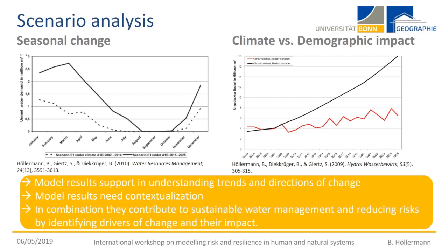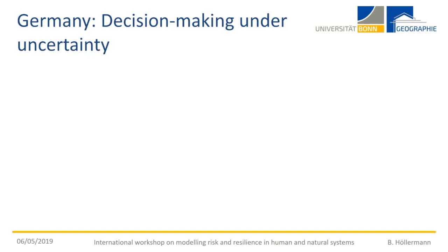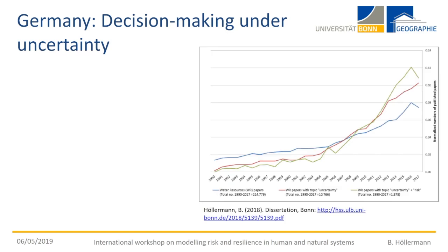Moving to the transdisciplinary case study — I worked with practitioners in different catchments in Germany, mostly with reservoirs. I show a timeline of publications from the 1990s to recently: the blue line is water resources publications, and overlaid is publications on water resources and uncertainty. Shortly after the influential paper from Funtowicz and Ravetz on post-normal science, the notion of uncertainty increased. Another increase came with the IPCC Third Assessment Report, and later in the 2010s the term 'risk' became increasingly important alongside uncertainty.